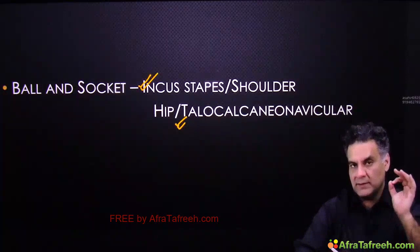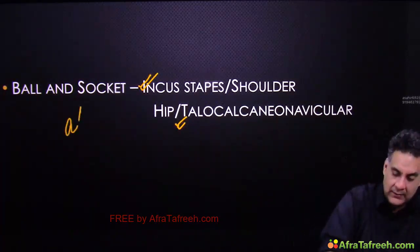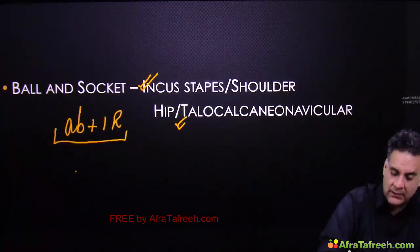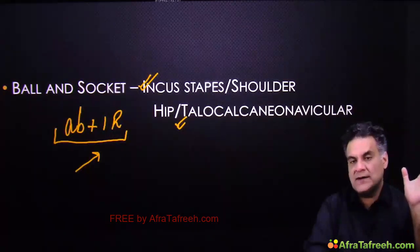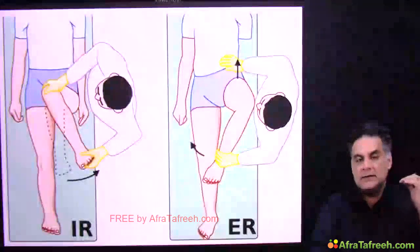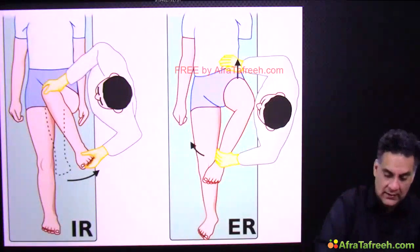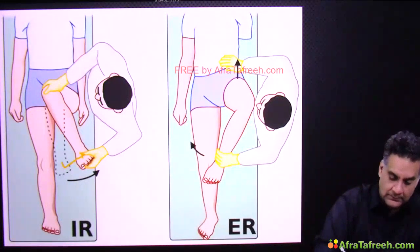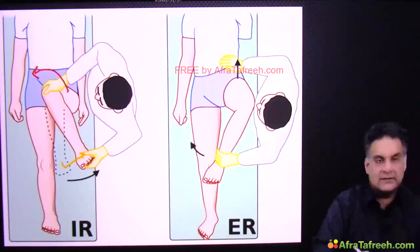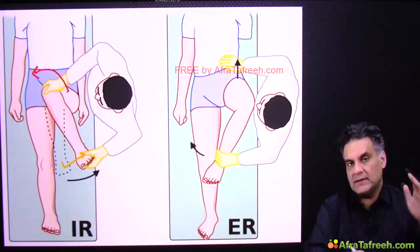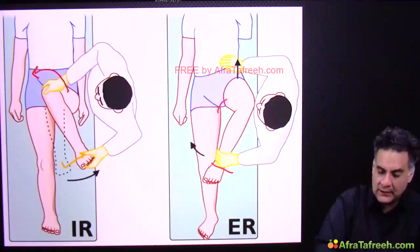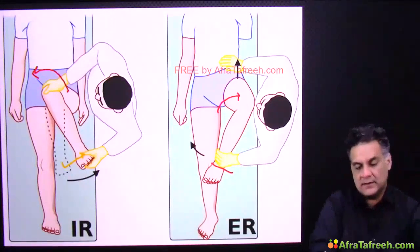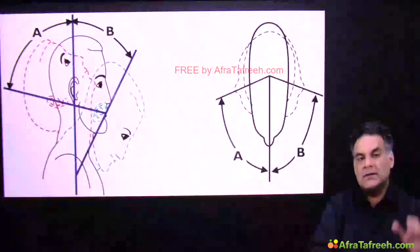Two movements define that the shoulder and hip are normal: abduction and internal rotation. If these are complete and full, the shoulder and hip are normal. Internal rotation is when you get the leg out but the thigh goes in — if this movement is okay, it is a very high indicator that the hip is normal.